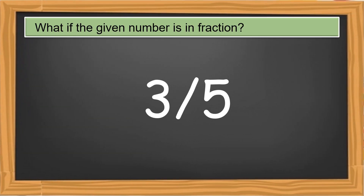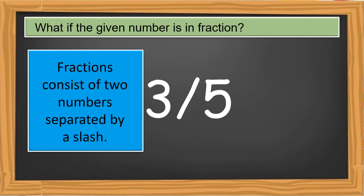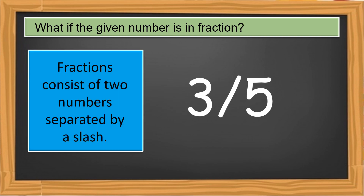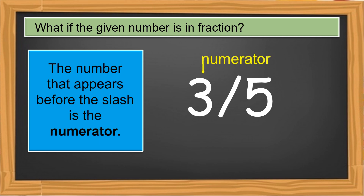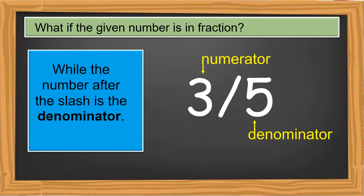What if the given number is a fraction? How are we going to read it? Let's review first the parts of a fraction. Fractions consist of two numbers separated by a slash. The number that appears before the slash is the numerator, while the number after the slash is the denominator.